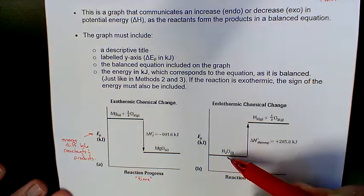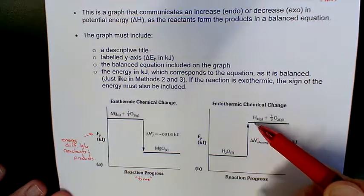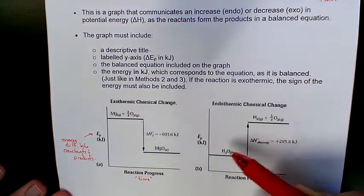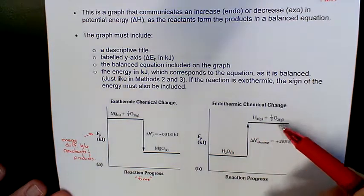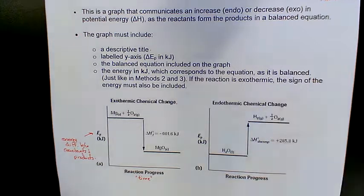In the endothermic one, when we were decomposing water, we said you had to input 285.8 kilojoules to make your hydrogen and your oxygen, so we can see that the system has more energy in its products than it did to begin with, and so we see this input of energy or the endothermic component to it.